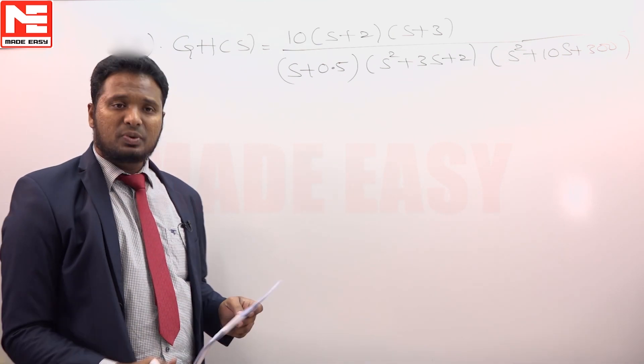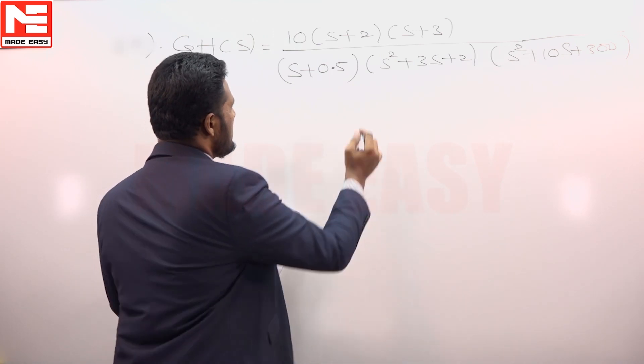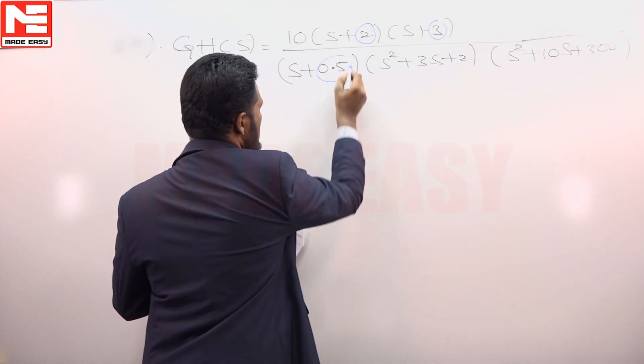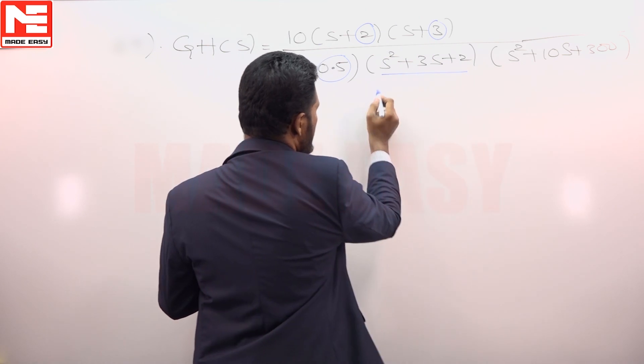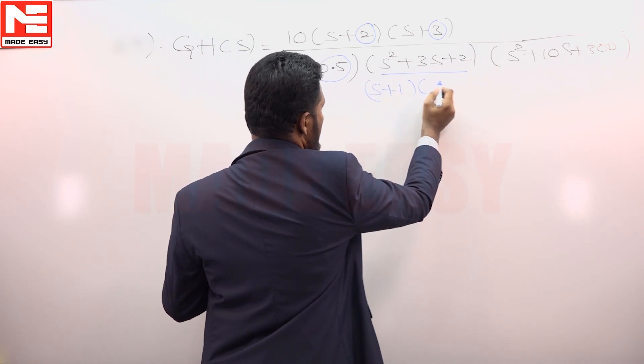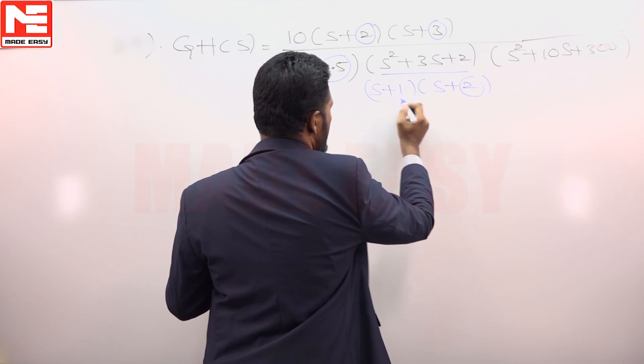Corner frequency happens to be the location of the pole and zero itself. These are corner frequencies. This can be written as (s plus 1)(s plus 2). These are corner frequencies.